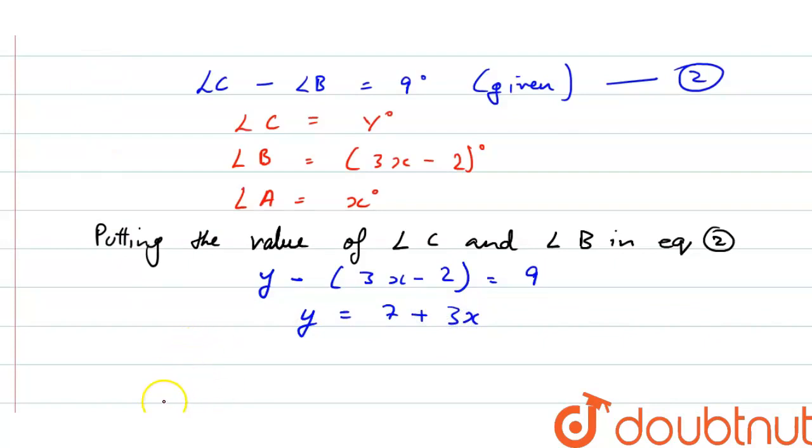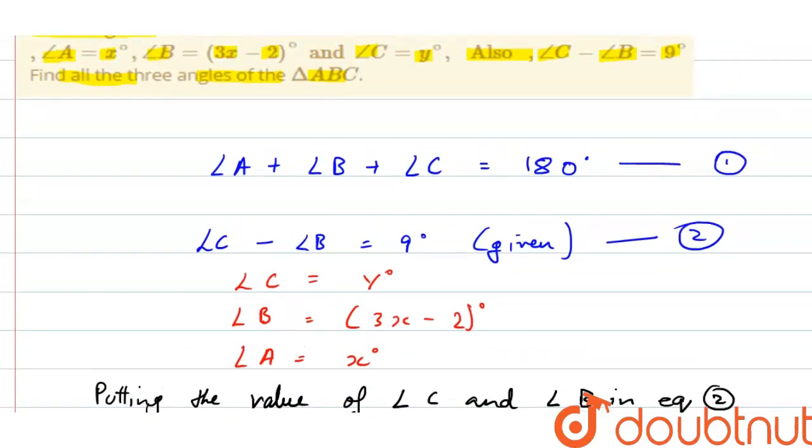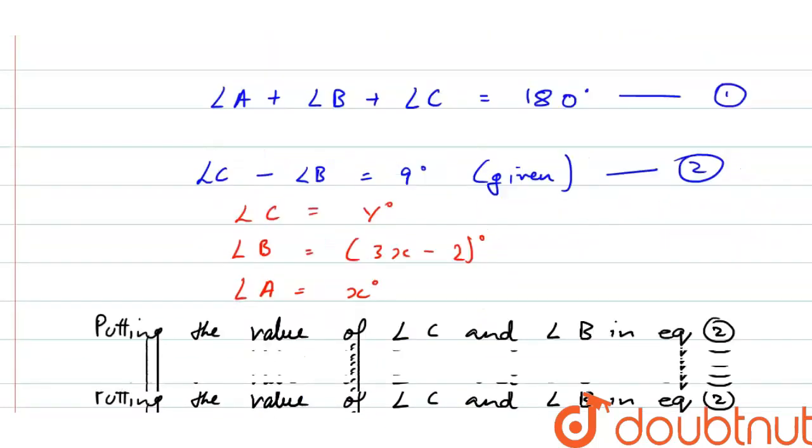Now putting all the values in first equation, then we will get x plus 3x minus 2 plus y, that is equals to 180. We have put all the values in this equation.